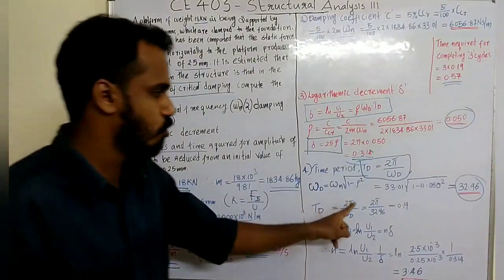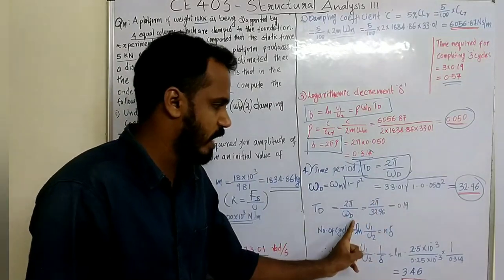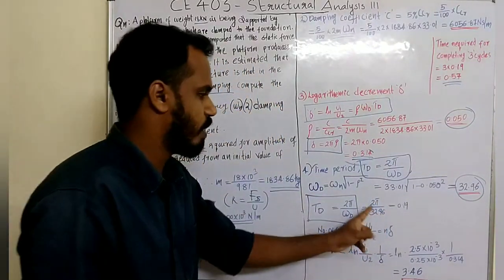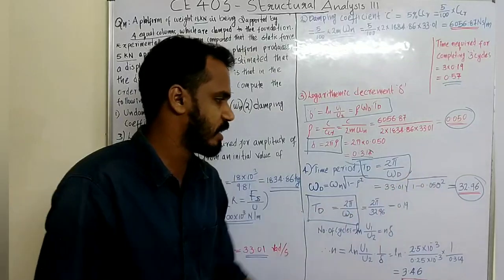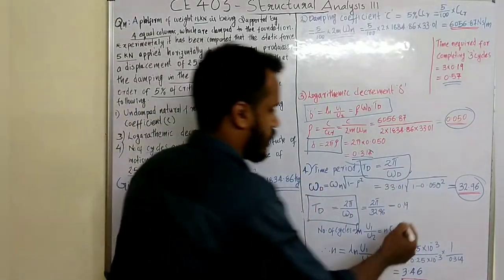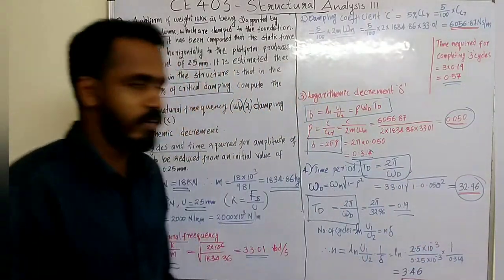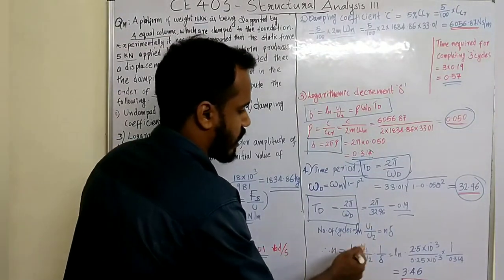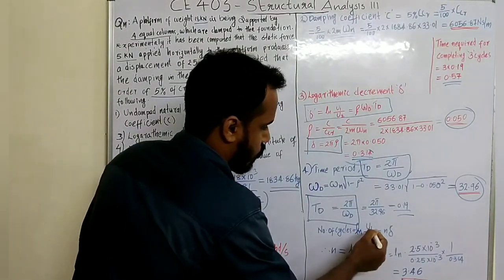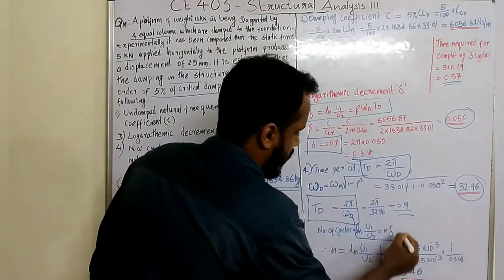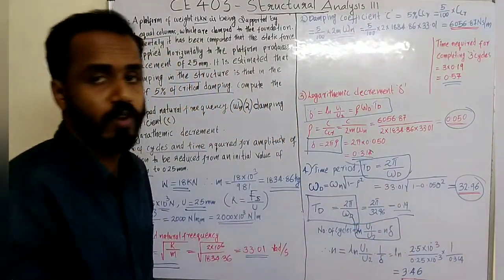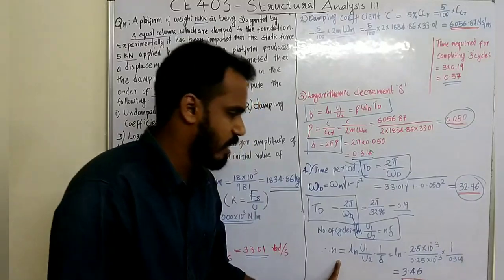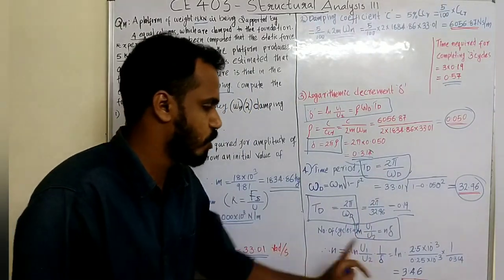t_d is equal to 2π divided by omega_d. Using ln(u1 by u2) equal to n times delta, where n is the number of cycles and u1 and u2 are successive amplitudes, we can solve for n.